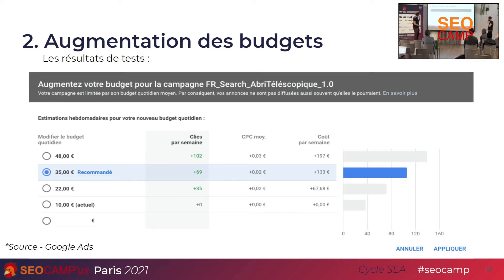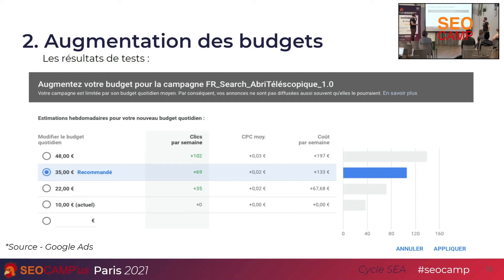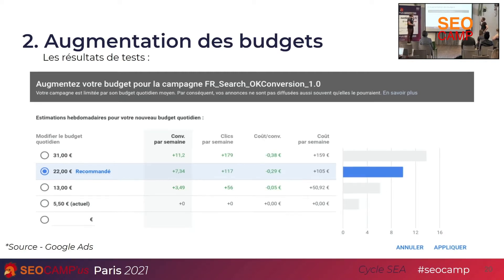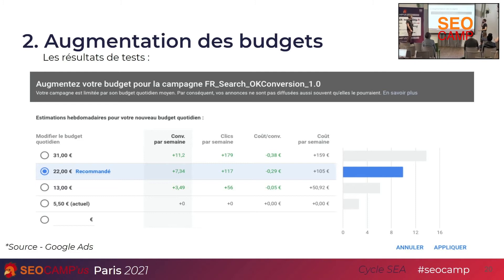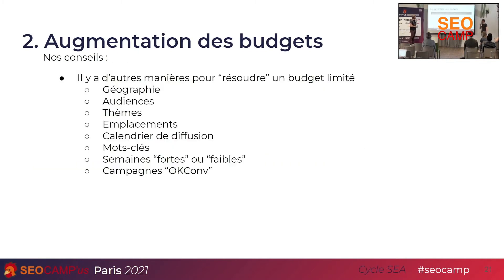On est sur une campagne qui dépensait 10 euros par jour. Il nous propose d'en mettre 35 et on voit que le nombre de clics va augmenter, mais le CPC aussi. Vous devez vous poser la question de savoir si c'est vraiment optimal de mettre plus de budget sur cette campagne précisément. On était à un peu moins de 40 clics avec 10 euros et pour obtenir 100 clics, on doit plus que tripler le budget. Sur un compte bien paramétré, Google va nous dire que vous ferez plus de conversions et que le coût par conversion va baisser.